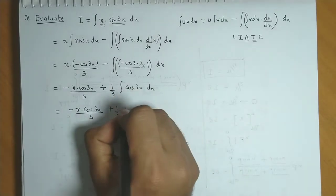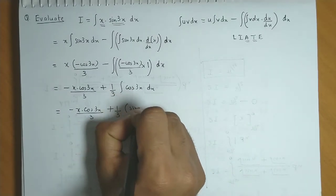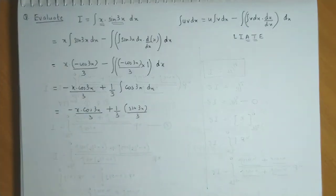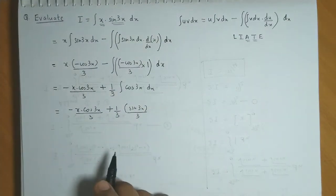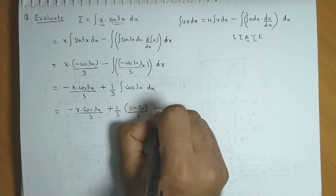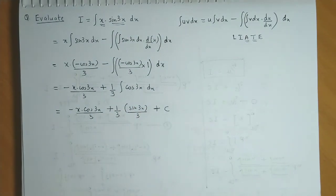Now integration of cos 3x is sine 3x divided by 3. Since it is an indefinite integration, we add the constant of integration, that is C.